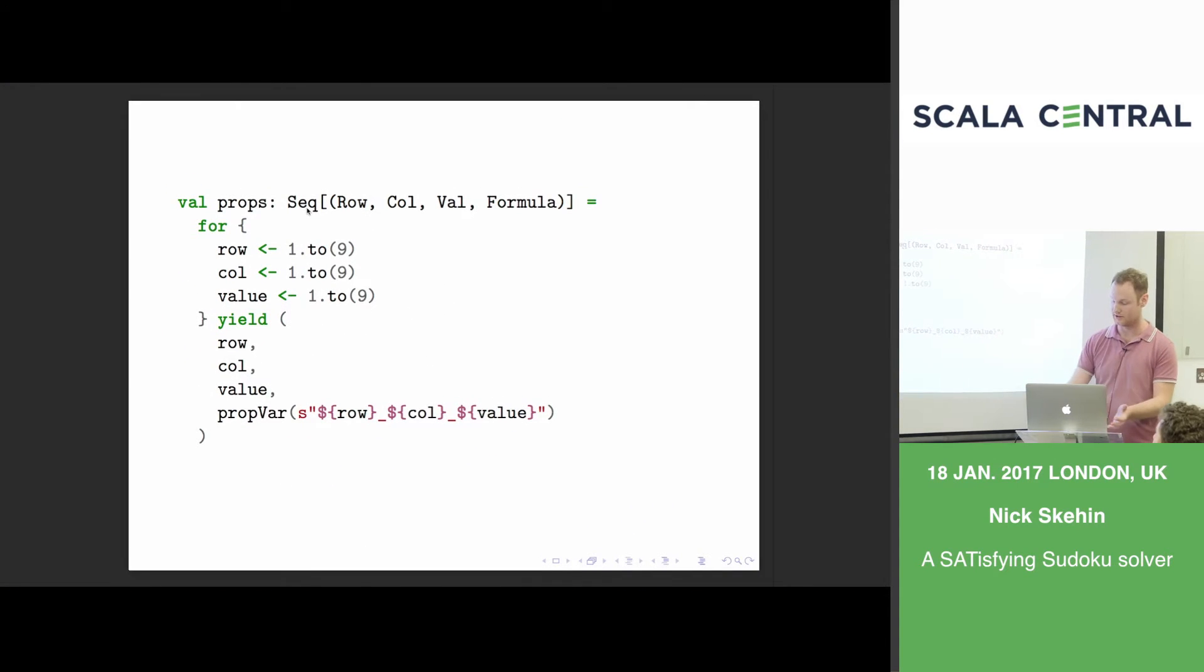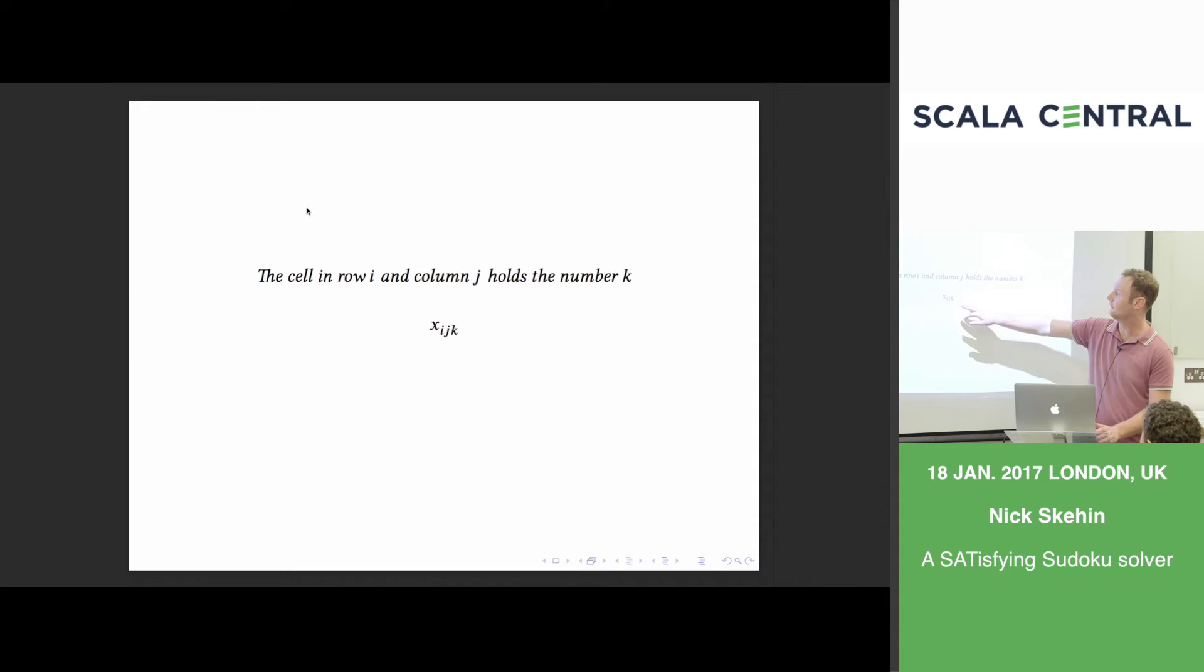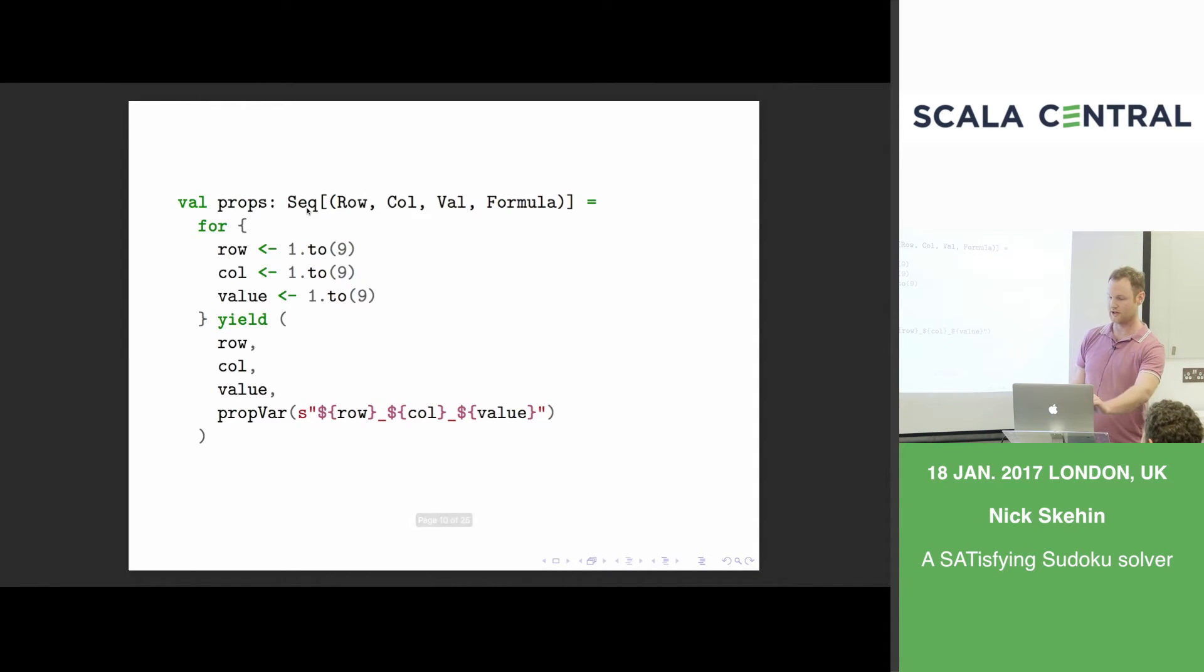It provides nice overloads for ands and ors and nots. So you just write what looks like a normal Boolean expression and it builds the formula up in memory. In Scala this is what we're talking about before. A proposition for every row, every column, and every value. So we just have for all numbers from 1 to 9 for a row, column, and value we generate a propositional variable and here we just give it a name.